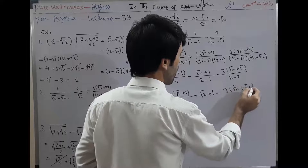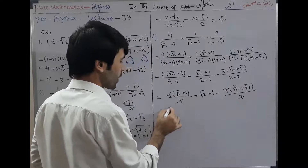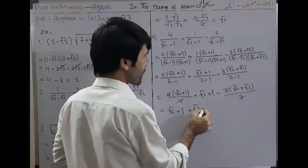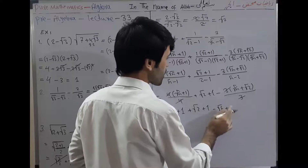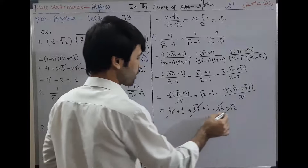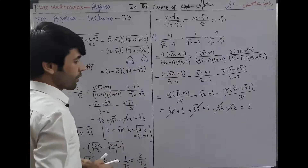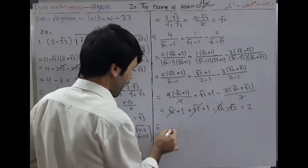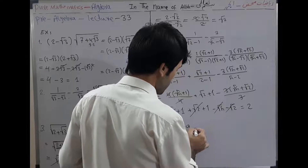Simplifying: (√5 + 1) + (√2 + 1) - (√5 + √2). The √5 terms cancel and the √2 terms cancel, leaving 1 + 1 = 2. That is the answer to Question 4.